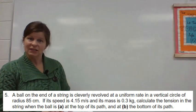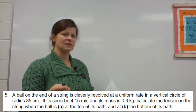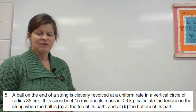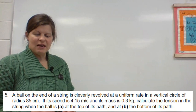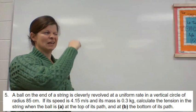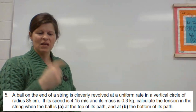We're on day two of circular motion and today we're going to look more at forces that cause the centripetal motion. So we're doing number five here and it says a ball on the end of a string is cleverly revolved at a uniform rate in a vertical circle, so that's this way. That's why it's clever because in order to maintain a constant rate in a vertical circle it's like impossible, so that's why it says cleverly.